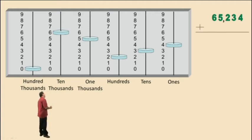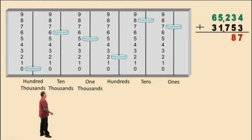And to this number, we are going to add 31,753. Now notice, let's start with the 1s column, 4 plus 3 is 7. In the 10s column, 3 plus 5 is 8. That gives us 80. In our 100s column, 2 plus 7 is 9. That gives us 900.